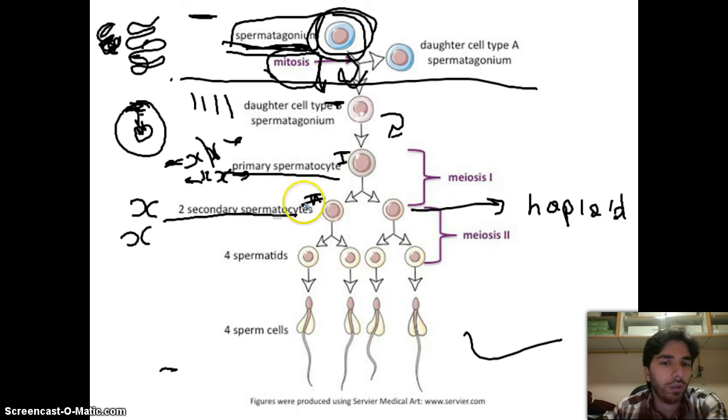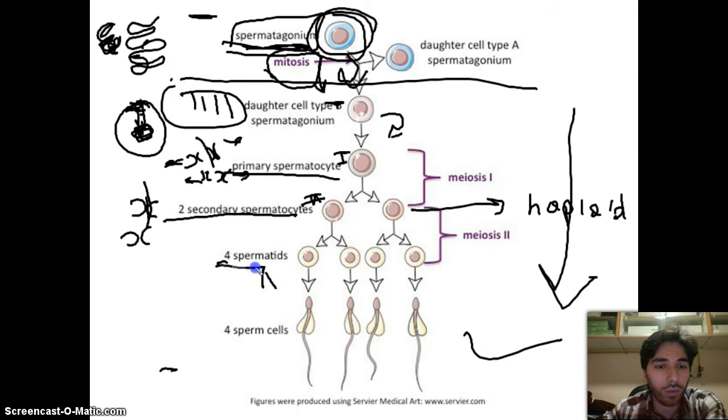We continue with meiosis two while going toward the center of the tubule. We go through prophase two, metaphase two, anaphase two. In anaphase two, we split the sister chromatids. Now each one will have two chromosomes with one chromatid each. Each cell has half the amount that we started with, which is four. We call these spermatids. They are now haploid and won't change their chromosome number, but they are still not functional sperm cells.